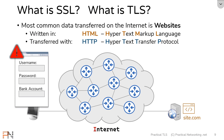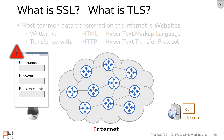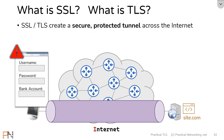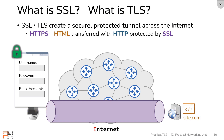This is the problem that SSL and TLS are trying to solve. What SSL and TLS do is they build a secure, protected tunnel across the internet. And now with this SSL tunnel, the client and the server can share information safely across the internet. What you are looking at here is what's known as HTTPS — an HTML webpage, transferred using the HTTP protocol, secured by an SSL tunnel.